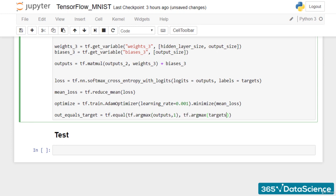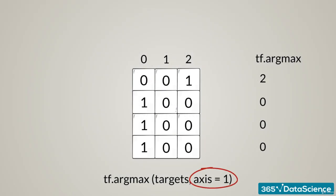However, to show we only care about the column indices, we include a second argument to the tf.argmax function. It is 1, as 1 refers to the column axes.